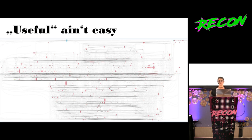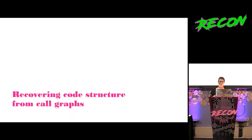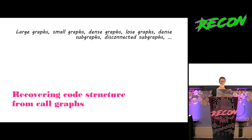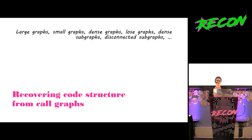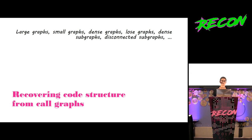So what can you do with the graph to make it actually useful? Well, there are certain attributes of the graph, depending on the visualization algorithms you apply, that you can see at first glance. For example, you can see whether it's a large graph or a small graph, a dense graph or a very loose graph. Or you can see whether you have disconnected subgraphs, or whether everything's very well connected. It gives you a base idea of how much code is in there.